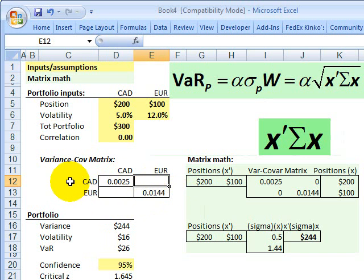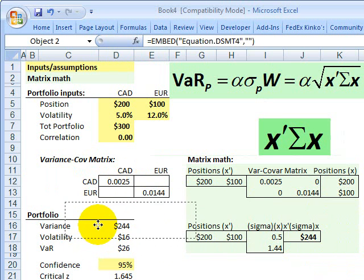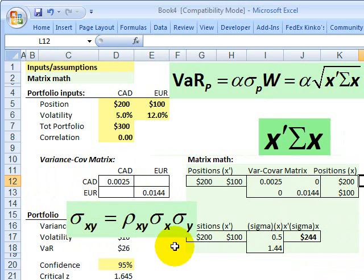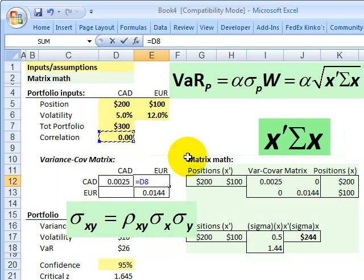Now, what do we put in this cell? This is the covariance between the Canadian dollar and the euro. Well, if you're an FRM candidate customer, I hope this is at least familiar. The covariance between X and Y is the correlation between X and Y multiplied by the volatilities. So right here, I can do this math directly. I can take the correlation between the two and multiply it by the volatility of the Canadian dollar, multiply it by the volatility of the euro. And I get zero because I have no correlation.